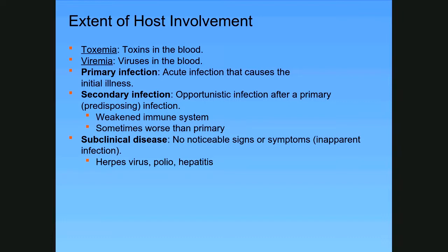A great example is in young children — usually toddler age. Their eustachian tubes are incredibly small and very narrow. A child may get a cold, an upper respiratory infection, causing a lot of mucus formation and swelling in the upper airway. That swelling puts pressure on the eustachian tubes. The ears won't drain, and bacteria in that fluid begins to overgrow, turning into a secondary ear infection. So a viral infection leads to a secondary bacterial infection in the inner ear.